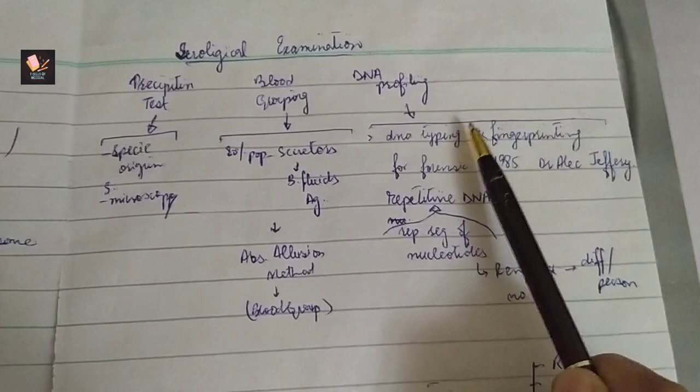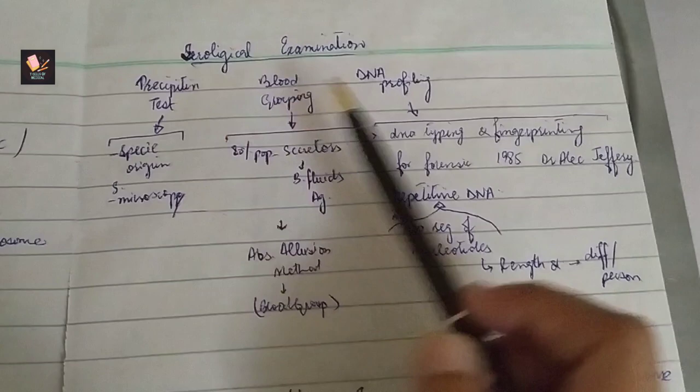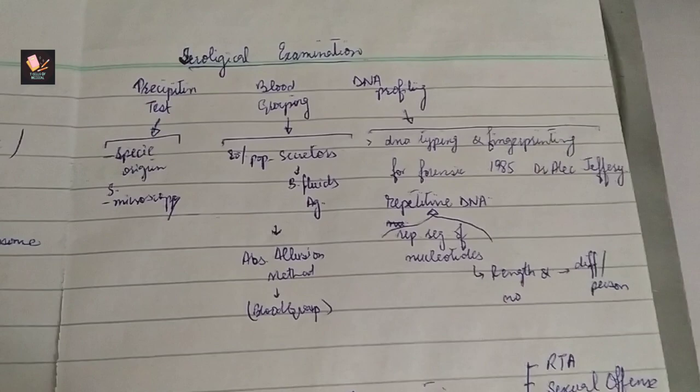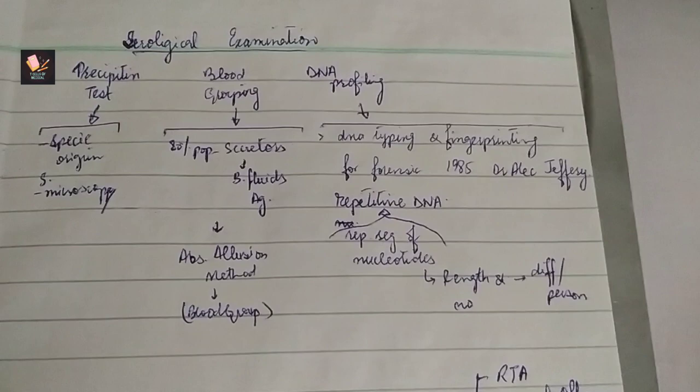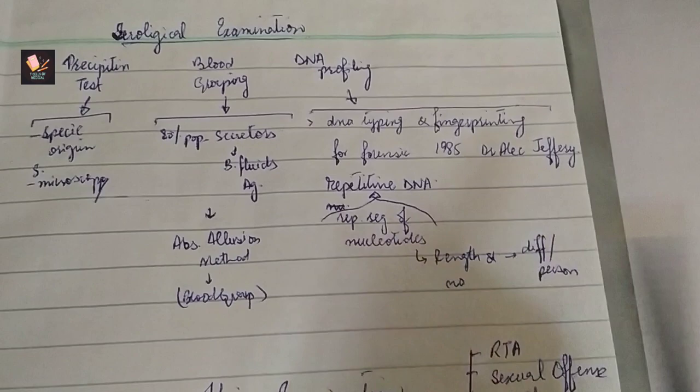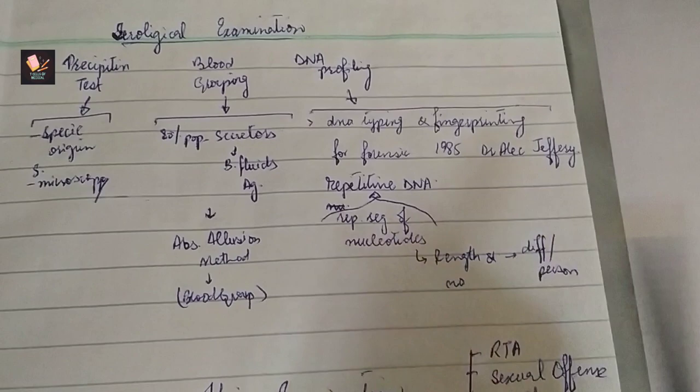Blood grouping and DNA profiling. In simple microscopy, use specific origin in blood grouping, and we determine the profiling. First time is forensic in 1985. Which are present in each person, and each person is different, as fingerprints are different. Offices we get out of the...